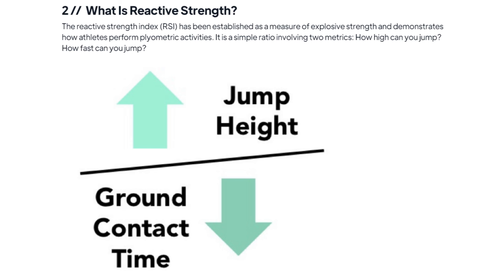One capacity that is really critical for our soccer players is reactive strength. This physical capacity represents the body's ability to rapidly switch from an eccentric action to a concentric action, and that is a requirement of many of the movement demands that we see in the sport, such as sprinting, jumping, and changing direction. The reactive strength index is a way of assessing an individual's reactive strength ability.